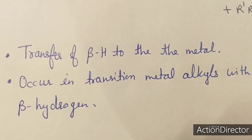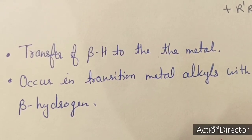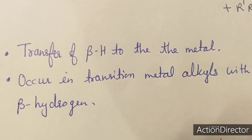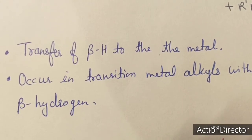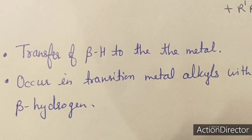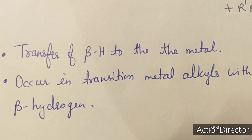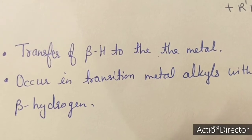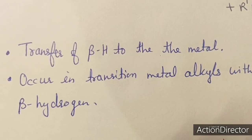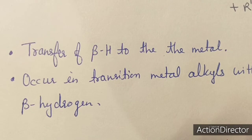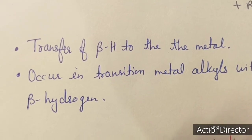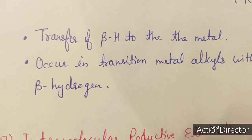Beta hydride elimination occurs in transition metal alkyls that have beta hydrogen. The beta hydrogen transfers to the metal during this process. If there is no beta hydrogen, then no beta hydride elimination will take place.